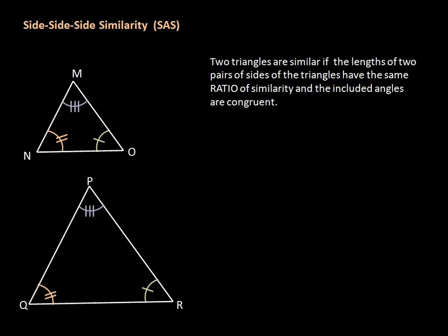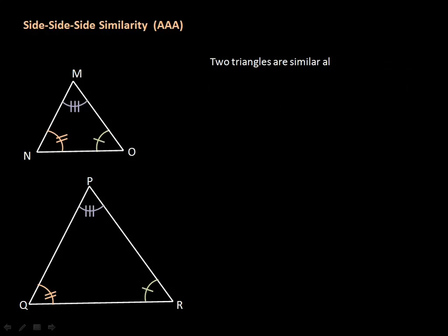There's one more property: Angle-Angle-Angle. Two triangles are similar if all three pairs of angles in the triangles are congruent.